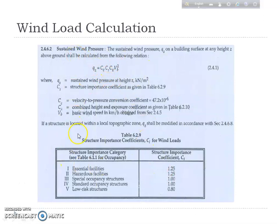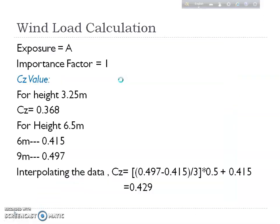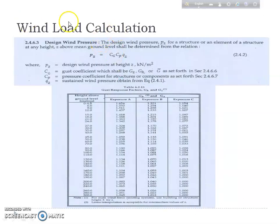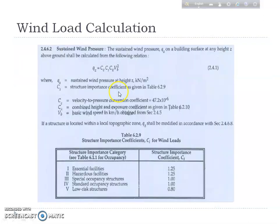We will refer to BNBC 2006 documents. Here we see the sustained wind pressure formula QZ, which helps find intensity PZ. The formula for PZ is: PZ = CZ × CP × QZ, where QZ is the sustained wind pressure obtained from this formula. CC is the velocity-to-pressure conversion coefficient.